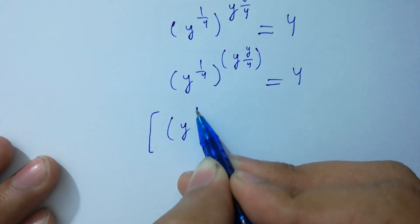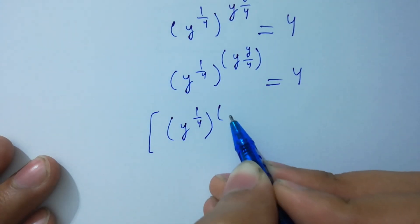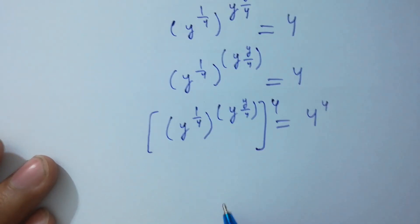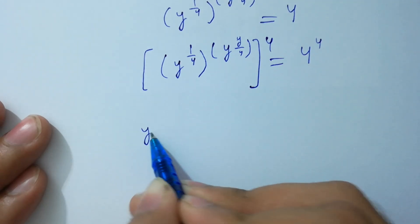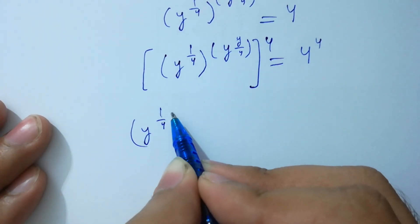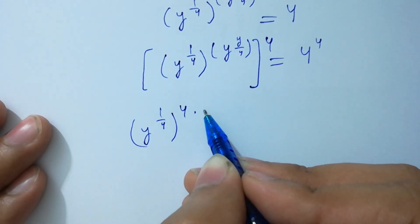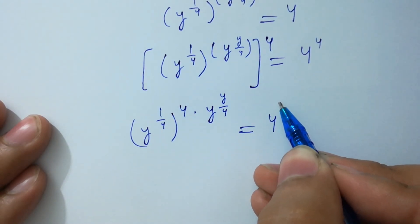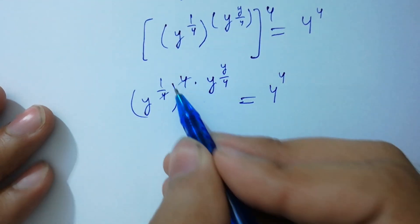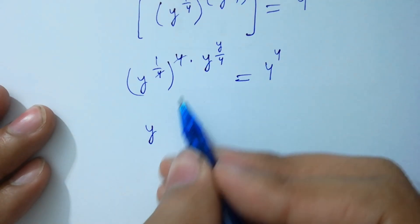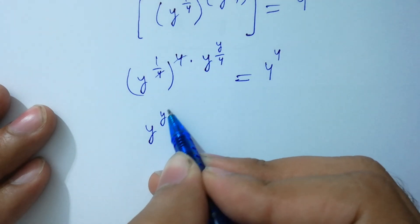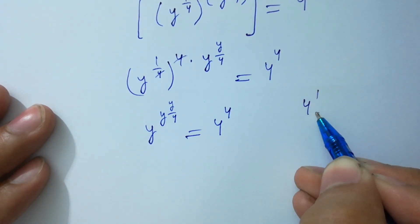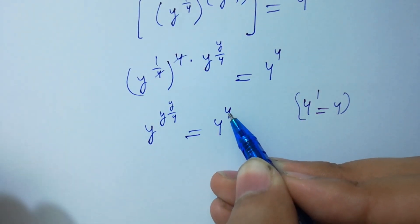Now take the exponent of 4 on both sides: y to the power 1 over 4, to the power y to the power y over 4, raised to the 4th power. The 4s cancel, leaving y to the power y over 4 equal to 4 to the power 4. Then y to the power y over 4 equal to 4 to the power 4. We can write 4 as 4 to the power 1.